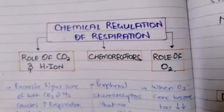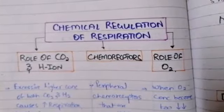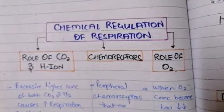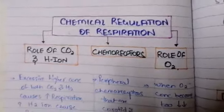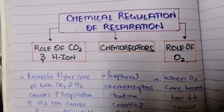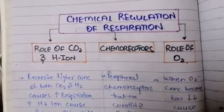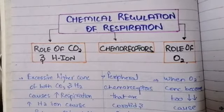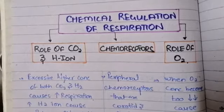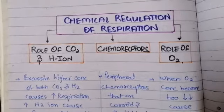The three mechanisms we will discuss are: the role of carbon dioxide and hydrogen, the chemoreceptors, and the role of oxygen. Starting with the role of carbon dioxide and hydrogen in the regulation of respiration.